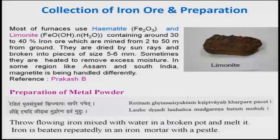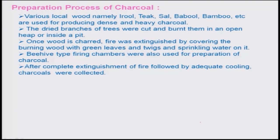They were also producing metal powders. There is a sloka whose meaning is: throw the flowing iron mixed with water in a broken pot and melt it. After washing the iron ore, they would put it into an iron mortar and pound it with passion so that there would be powder. Various local woods namely erule, teak, sal, babul, or bamboo were used for producing dense and heavy charcoal.